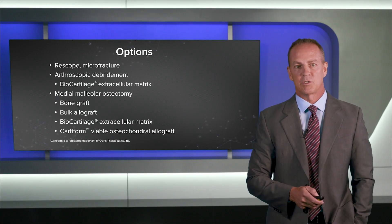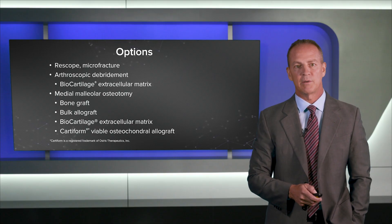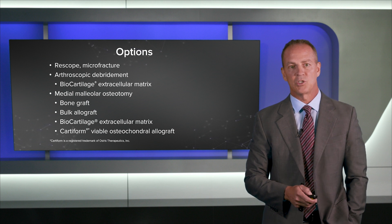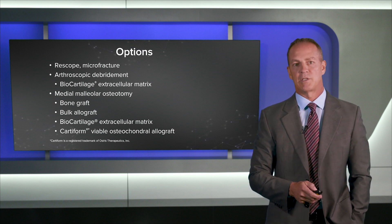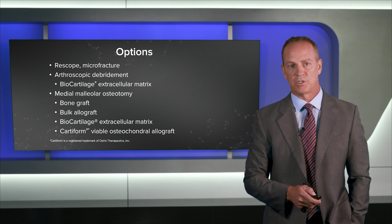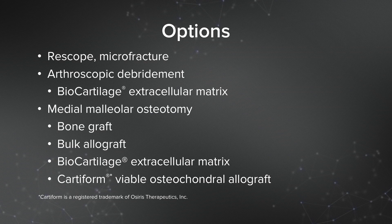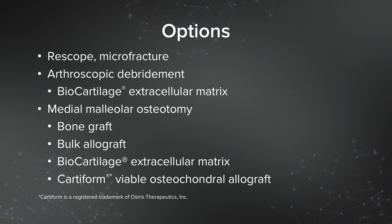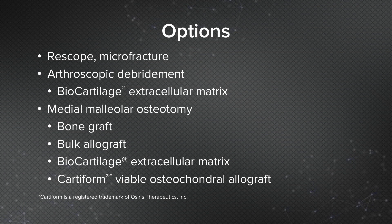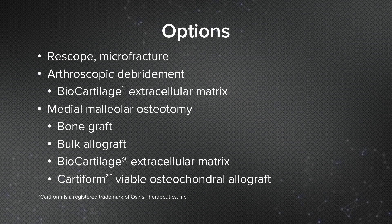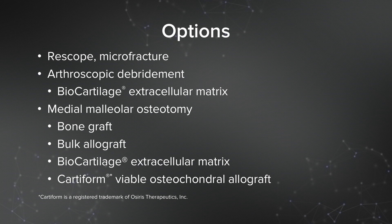So what were our options at this point? We could re-scope him and microfracture that lesion — the data would suggest that maybe that is what we should do, as many patients do well after a revision arthroscopy and microfracture. But I felt that lesion was a little bit larger than most, and had it been smaller, maybe a centimeter or so, I would have probably preferred to move forward with just a microfracture revision of my initial procedure.